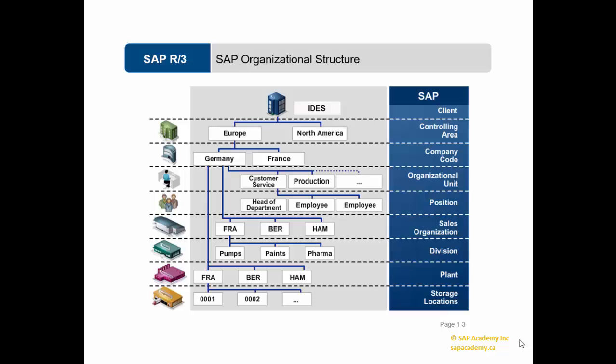The next level is distribution channel, which is the medium through which products and services are distributed by an organization to its end users. Division in an organizational structure represents a product or service line in a single organization. A sales area is the entity required to process an order in a company — it comprises of sales organization, distribution channel, and a division. In SAP SD organizational structure, each sales organization is assigned to a company code, then distribution channels and divisions are assigned to sales organizations, and all of these comprise a sales area.